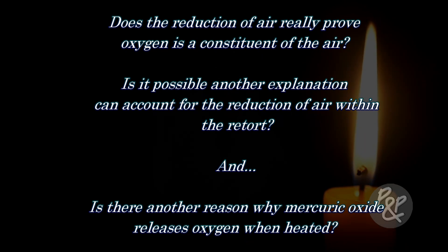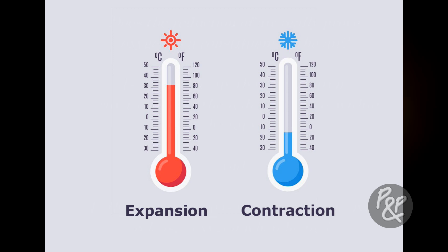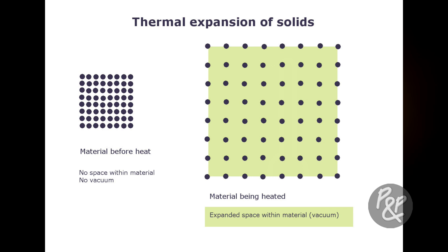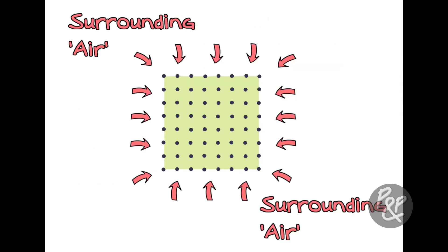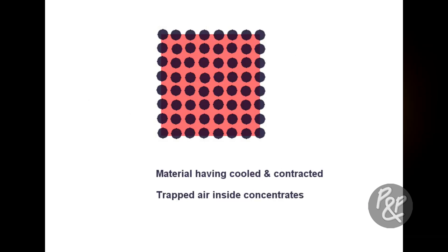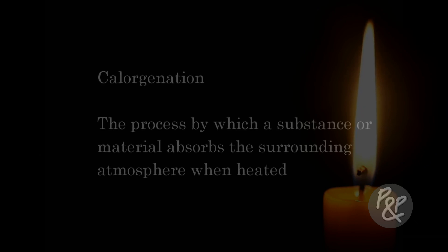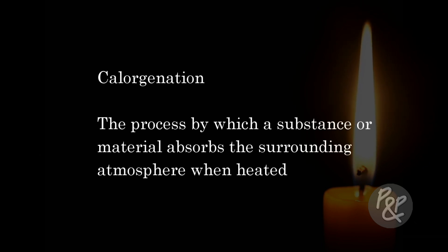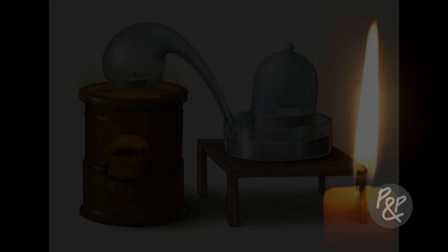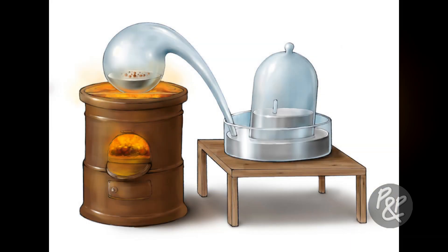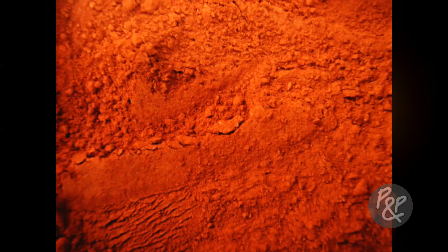We think there is another explanation. It's common knowledge that when materials are heated they expand, and when cooled they contract. We are of the opinion that when a material expands, a vacuum is generated inside, and as nature abhors a vacuum, the surrounding air will fill the void inside the material. Upon cooling, the material contracts and in so doing locks in and concentrates the absorbed air. This process we call callogenation — the process by which a substance or material absorbs the surrounding atmosphere when heated. So when Lavoisier heated the mercury, it's possible mercury absorbed a specific amount of the air inside the system.